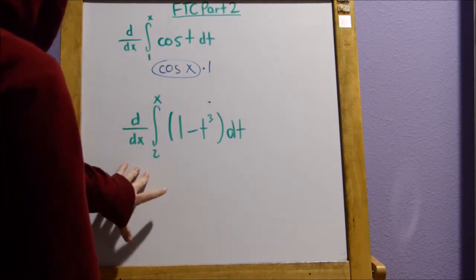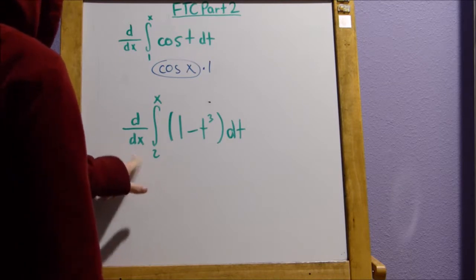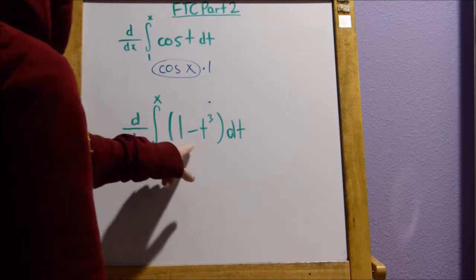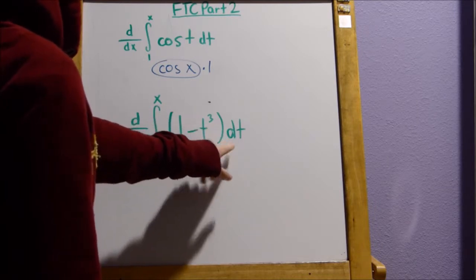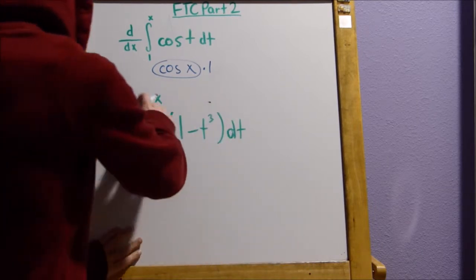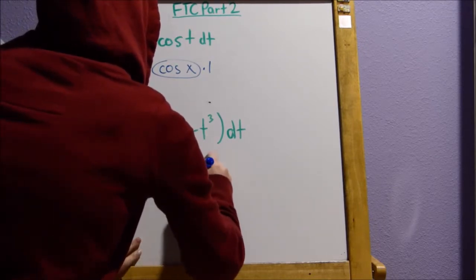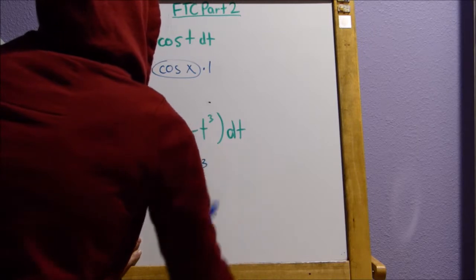Now, how about this one? Here we have the derivative of the antiderivative from two to x of one minus t cubed times dt. Here, we're going to apply that same idea. Just plug in x for t. So, we get one minus x cubed.